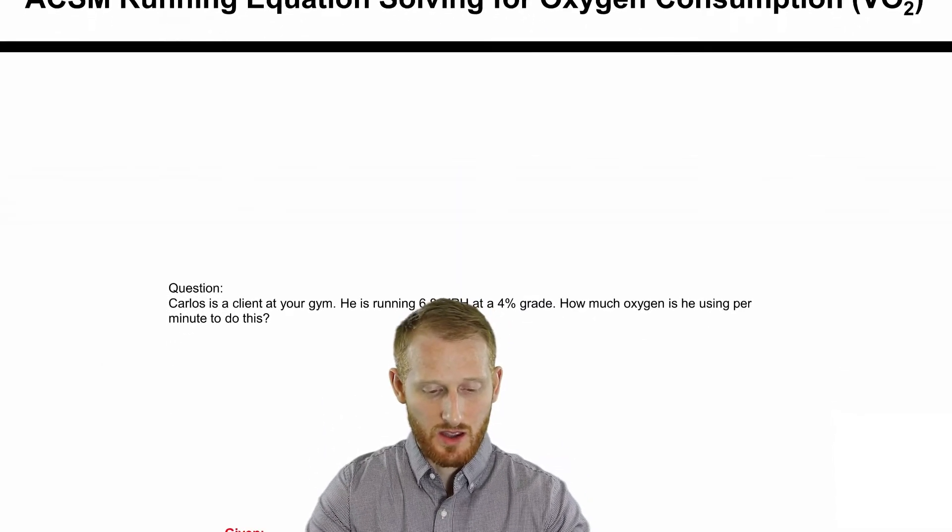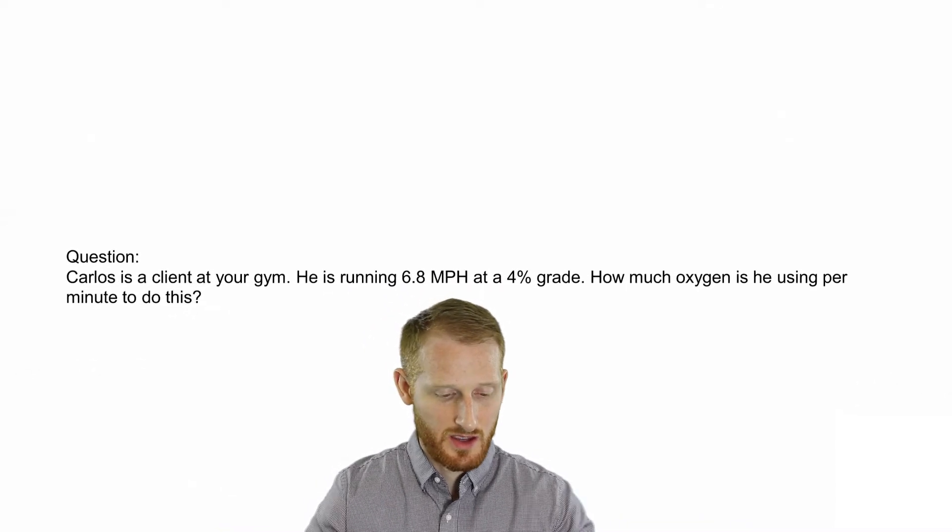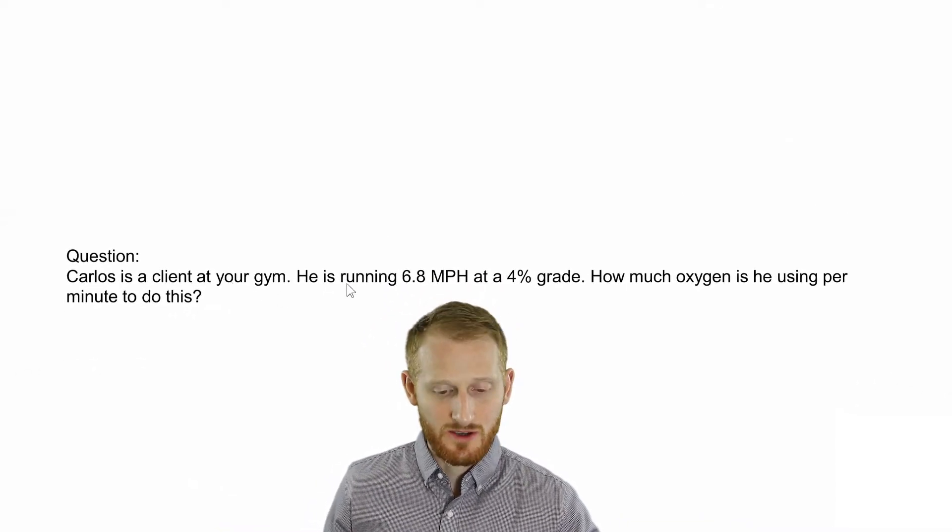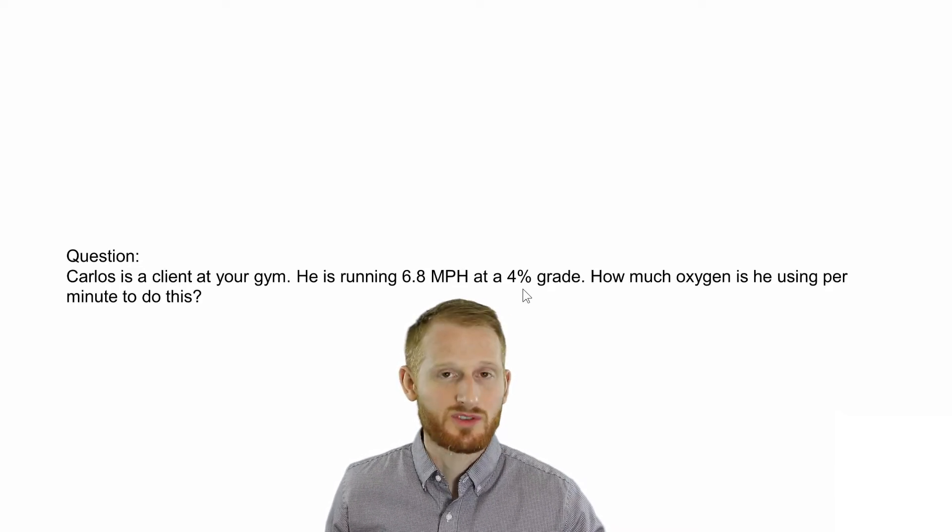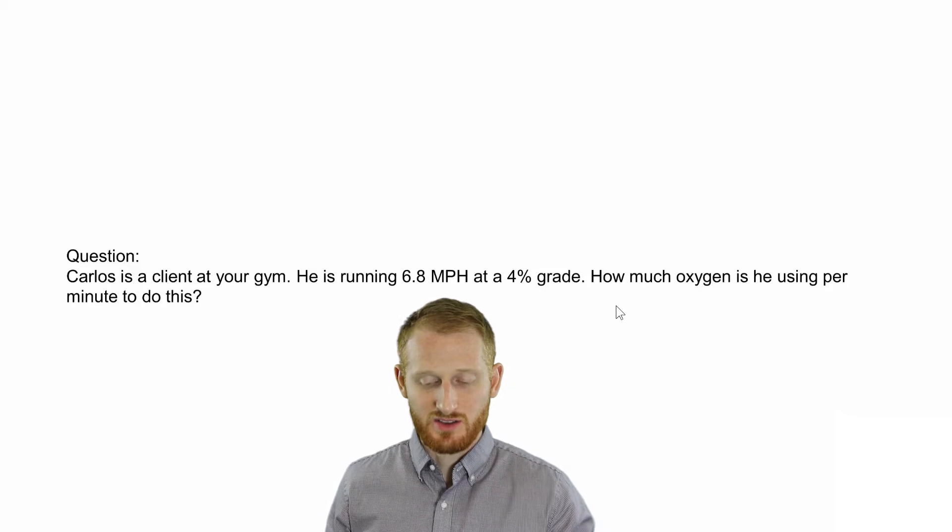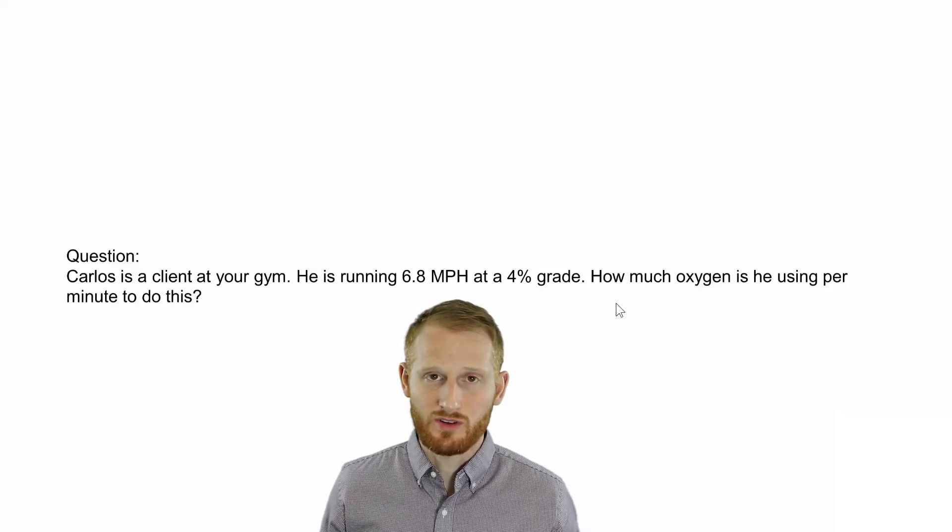So let's use a question in order to help us here. Carlos is a client at your gym. He's running on a treadmill at 6.8 miles per hour, 4% grade.